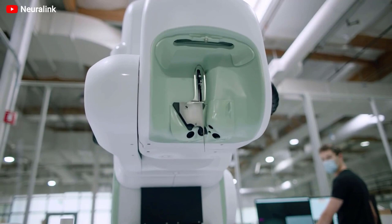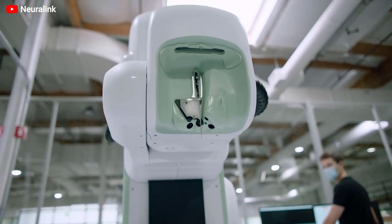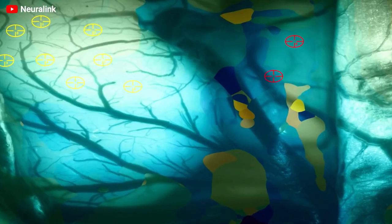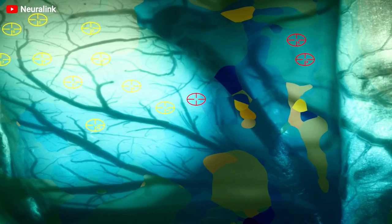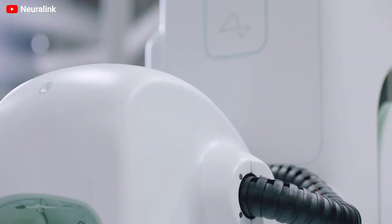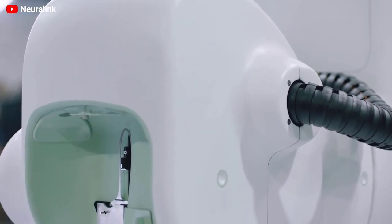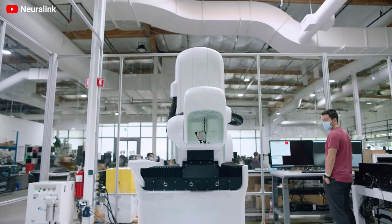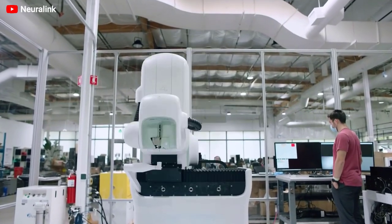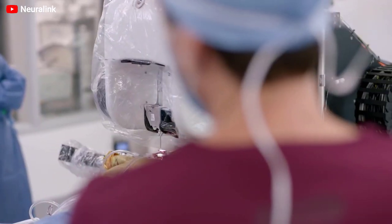Neuralink engineers have developed a special surgical robot that can perform the insertion automatically. The industrial design of the surgical robot, which is programmed to safely inject neural threads into the brain, was developed by the American design company Woke Studios. The surgical robot is designed to soothe patients. As Woke Studios explained, the team wanted to design the device so that it would fit the clinical environment, but also soothe patients and reflect the futuristic nature of the technology.